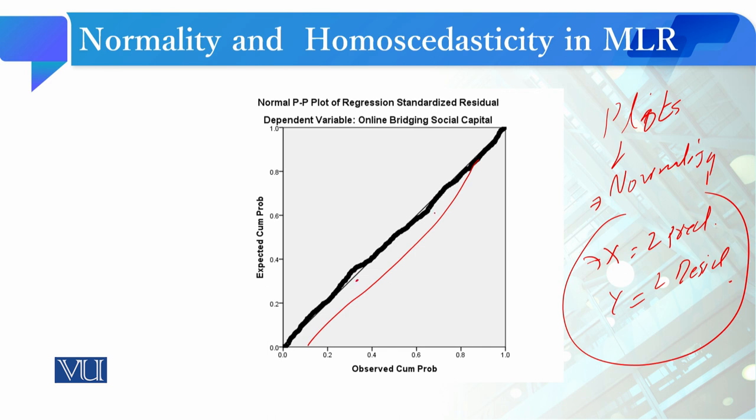There is a little curve in the linear line, but it is a very minute deviation from the linear line, so we can neglect that deviation and conclude that we have fulfilled the assumption of normality.